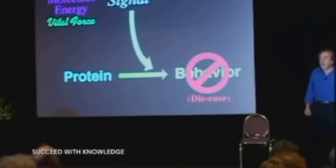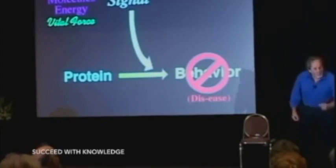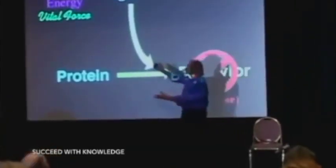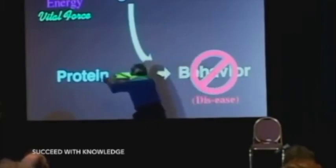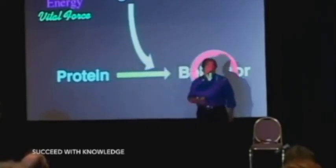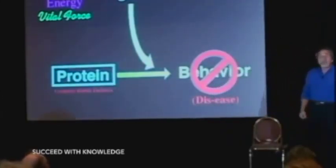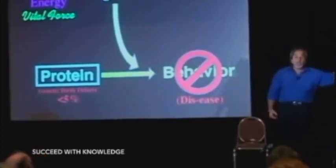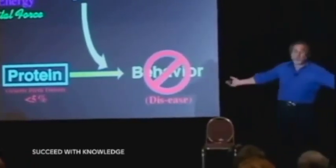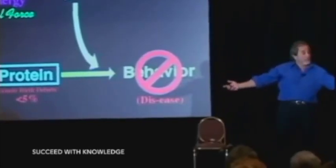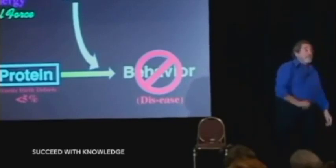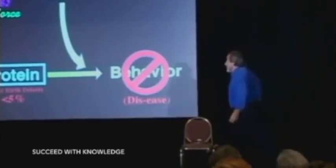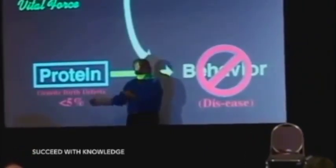You already have all the information to answer this question. If you are expressing a disease, what can you attribute it to? There are only two things — take the arrow backwards: it's either the proteins are screwed up or the signals are screwed up. When it comes to the protein, if you have defects in making your proteins, those are called birth defects — that's less than 5% of the population. That means 95% of the population cannot use that excuse, and if those people are sick and express a dis-ease, we can't go back and blame it on the proteins.